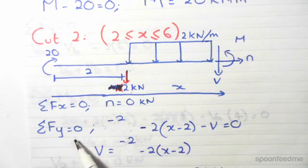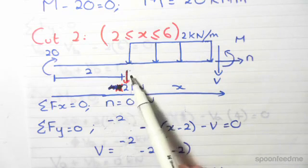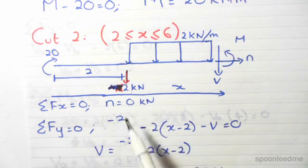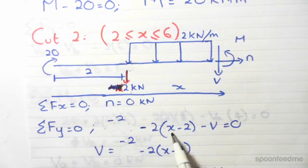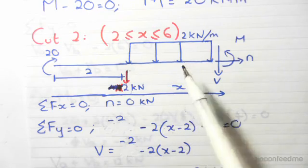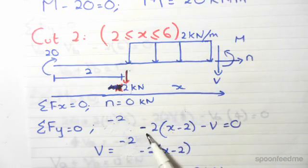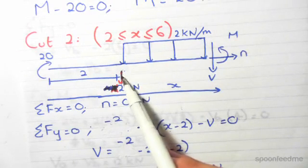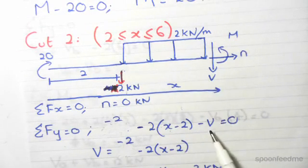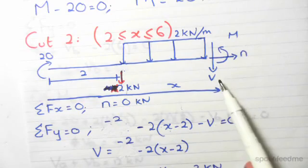Sum of forces in the y direction is equal to 0. So we've got minus 2 which is this one over here. Minus 2 into x minus 2, so what is this? This is the UDL. UDL points downwards so it's a minus and it spans over a length of x minus 2 which is from here to here. Then we have minus V because V points downwards.